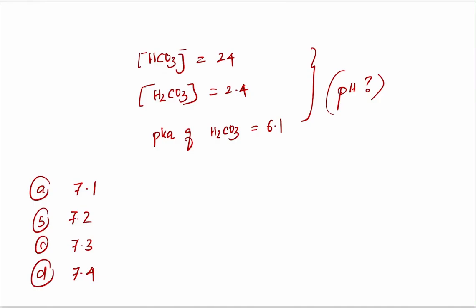We have the bicarbonate concentration given as 24 millimolar per liter, carbonic acid concentration of 2.4, and the pKa value of bicarbonate is 6.1. Please find out what is the pH value. We are using Henderson-Hasselbalch's equation.